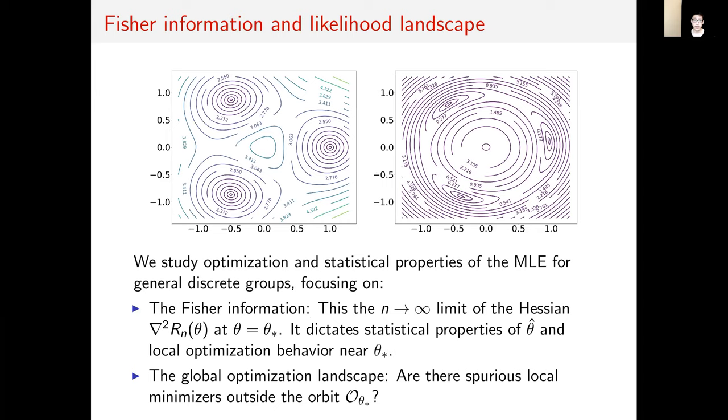The relevant quantities to study for MLE are the Fisher information and likelihood landscape. The Fisher information is the large n limit of the Hessian of the negative log likelihood at the unknown signal point. It dictates the properties of the MLE as well as the local optimization behavior near the unknown signal. The global landscape asks whether there are spurious local minimizers, away from the orbit of the unknown signal. This determines whether MLE actually returns a point near the true signal.